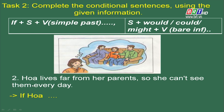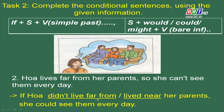Sentence 2: Hoa sống xa cha mẹ của cô ấy, vì vậy cô ấy không thể thăm họ mỗi ngày. Câu điều kiện sẽ được hình thành như thế nào? Correct: If Hoa didn't live far from her parents, she could see them every day — hoặc: If Hoa lived near her parents, she could see them every day. Ở mệnh đề if có 2 cách trả lời với nghĩa tương tự nhau. Ở trên là can't see, chúng ta đổi thành could see.